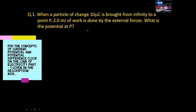Question number 1: When a particle of charge 10 microcoulomb is brought from infinity to point P, 2.0 mJ of work is done by external force. What is the potential at point P?